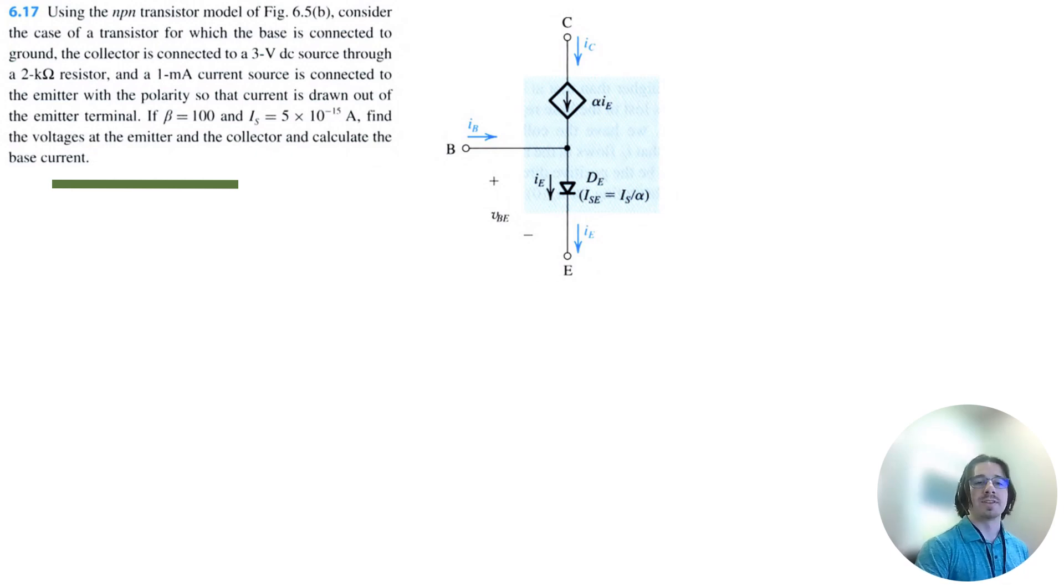Let's solve problem 6.17 from Microelectronics Circuits 8th edition by Sedra and Smith. We're going to use the NPN transistor model to consider the case of a transistor for which the base is connected to ground, the collector is connected to a 3 volt DC source through a 2 kilohm resistor, and a 1 milliamp current source is connected to the emitter with the polarity so that current is drawn out of the emitter terminal.